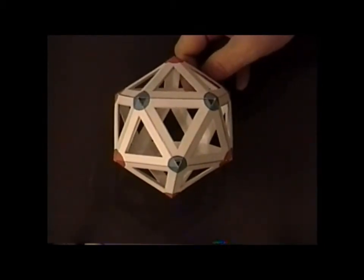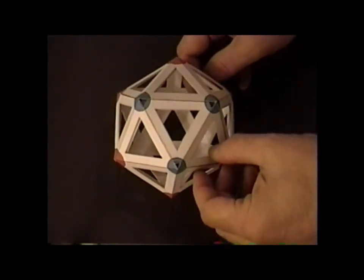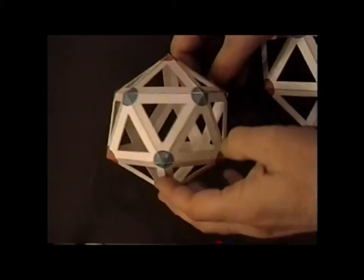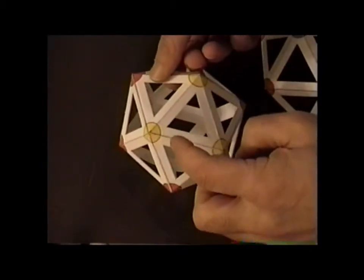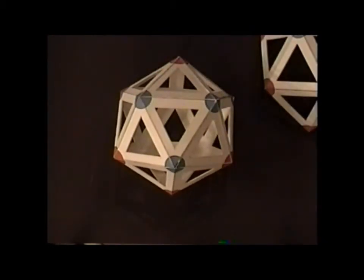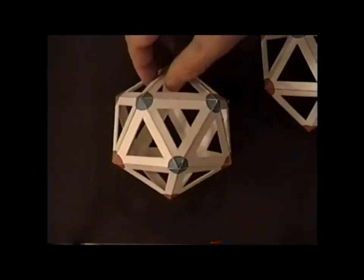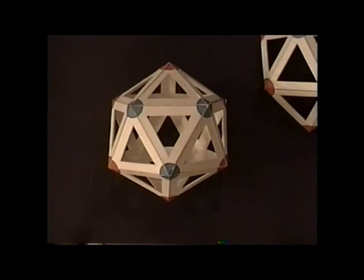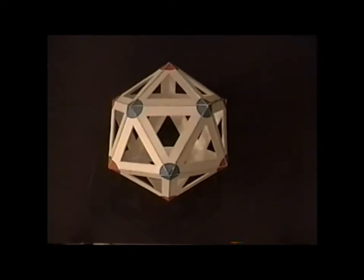Now the question becomes, which point group is this? Well, since this side is a blue triangle and this side is yellow, we don't have D3D anymore. What we've done is we've reduced the symmetry from D3D down to C3V in a similar manner to how we went from D5D to C5V. By switching the colors on the opposite triangle, we've reduced the symmetry down. So this is an example of C3V, another one of the many subgroups of IH.